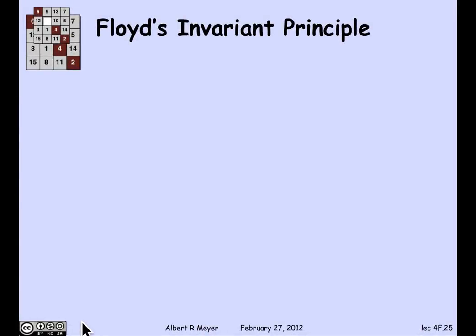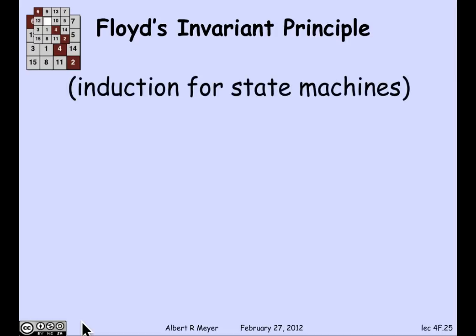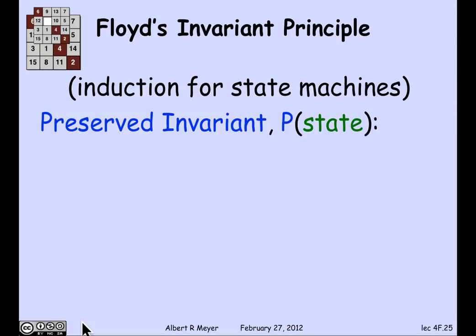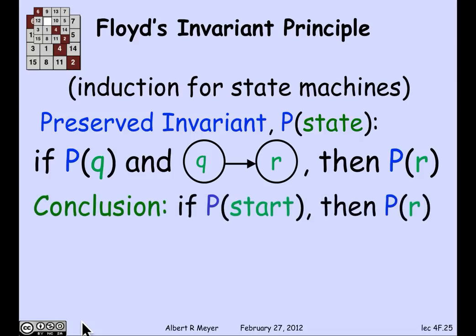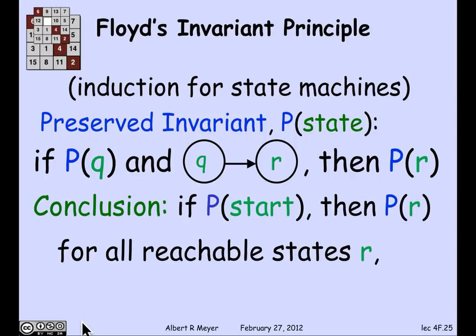What we've illustrated here is an argument that's known as Floyd's invariant principle, and it's really nothing but induction reformulated for state machines. The statement of Floyd's invariant principle is that we're going to define a preserved invariant as a property of states. A preserved invariant means it has the property that if you're in a state that has property P, and it's possible to make a single transition to a state R, then R will also have property P. This is just like the induction step where you have to prove that P of n implies P of n plus 1. So if you have a preserved invariant, then if the property holds at the start state, then it's obvious that the property will hold for all of the states that you can possibly get to, that P of r will hold for all reachable states. You can prove this by induction of the number of states, but I think it's clear that if you have a property that you begin with and it doesn't change making a step, it's never going to change. That's all that Floyd's invariant principle states.